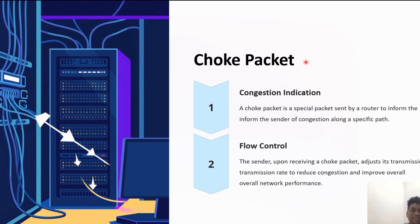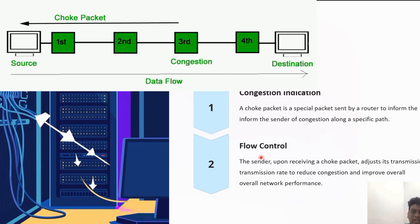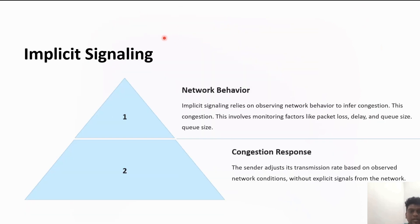The back pressure technique can be applied only to virtual circuit networks, avoiding congestion by reducing the transmission rate. It alleviates network congestion and provides smooth data transmission. The next type in closed loop technique is choke packet, which works with congestion indication and flow control. A special packet is sent by the router to inform the sender about congestion in a specified path.